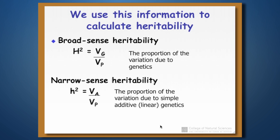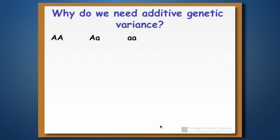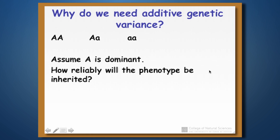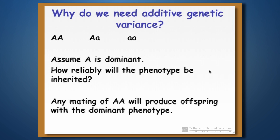What is additive genetic variance? Let's look at a simple Mendelian example. Assume the big A allele is dominant, and ask how reliably a particular phenotype can be inherited depending on the original genotype. When the homozygous dominant mates with anything else, it's guaranteed that offspring will have its phenotype, because offspring will always get at least one copy of the dominant allele. So in that case, heritability is 100%.